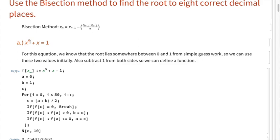Problem a: x to the fifth plus x equals one. For this equation, it's pretty easy to figure out that the root lies somewhere between zero and one from simple guesswork. We'll hang on to these two values and define our f of x function to be f(x) = x^5 + x - 1. Here are our two initial values, and we'll define a third variable c for future use.